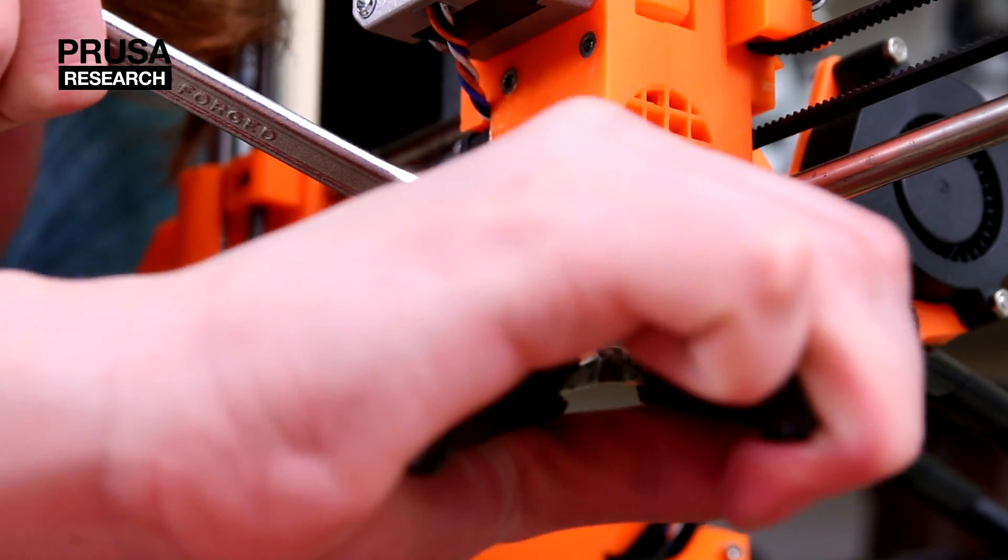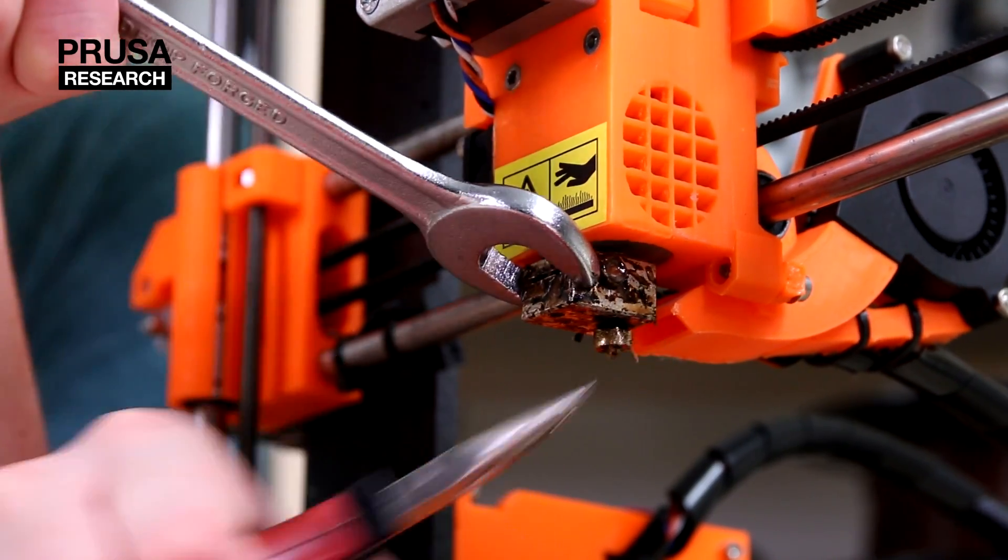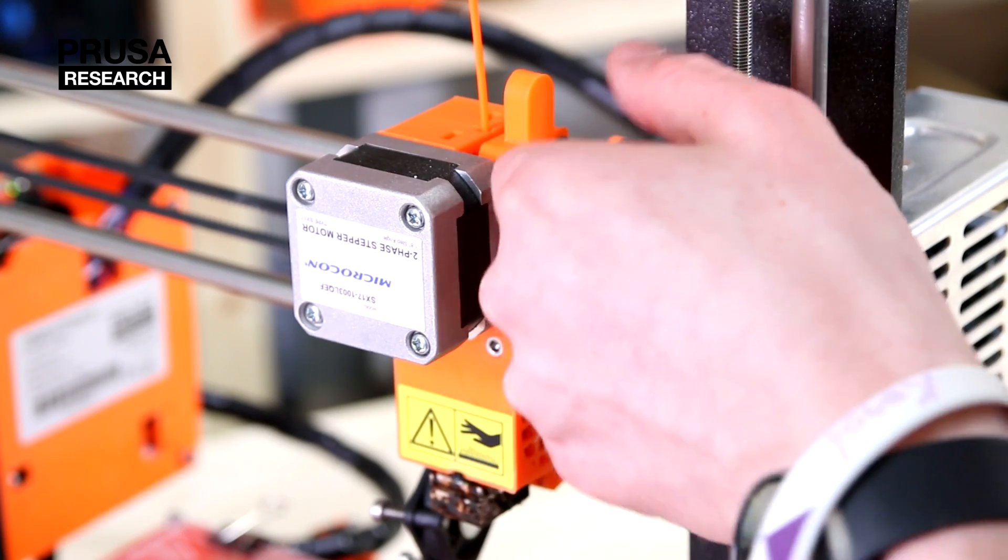After heating the nozzle, we will hold the heat element with a wrench and loosen the nozzle end itself about half the thread. Then we unscrew the cooler from the nozzle, the screws from the hop pulley.